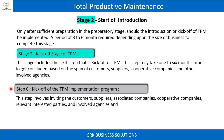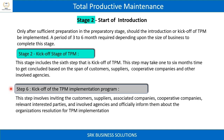Step 6: Kickoff of the TPM implementation program. This step involves inviting customers, suppliers, associated companies, cooperative companies, relevant interested parties, and involved agencies, and officially informing them about the organization's resolution for the TPM implementation program.